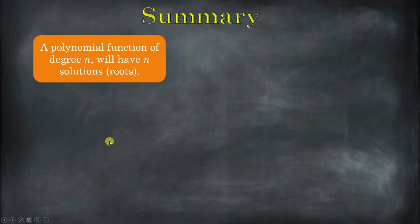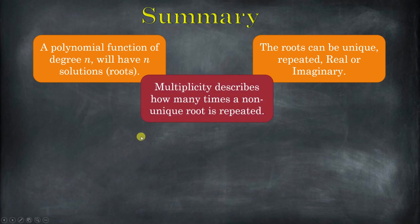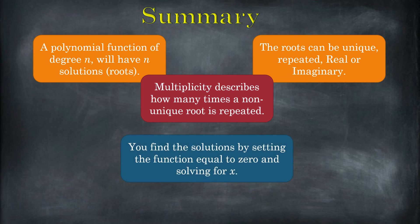The big idea: if you have a polynomial of degree n, there are going to be n solutions. So a degree-9 polynomial will have nine solutions. Those solutions can all be unique, or you can have a combination where some are repeated and some are unique — it could be real and imaginary in any combination. No matter what, you're going to have exactly as many roots as the value of the degree. Multiplicity describes how many times a non-unique root is repeated. For example, x minus 2 to the power of 11 has 11 solutions, but they're all x equals 2 repeated. To find solutions, set the equation equal to zero and factor as much as you can, then use whatever tools are available to solve for x.